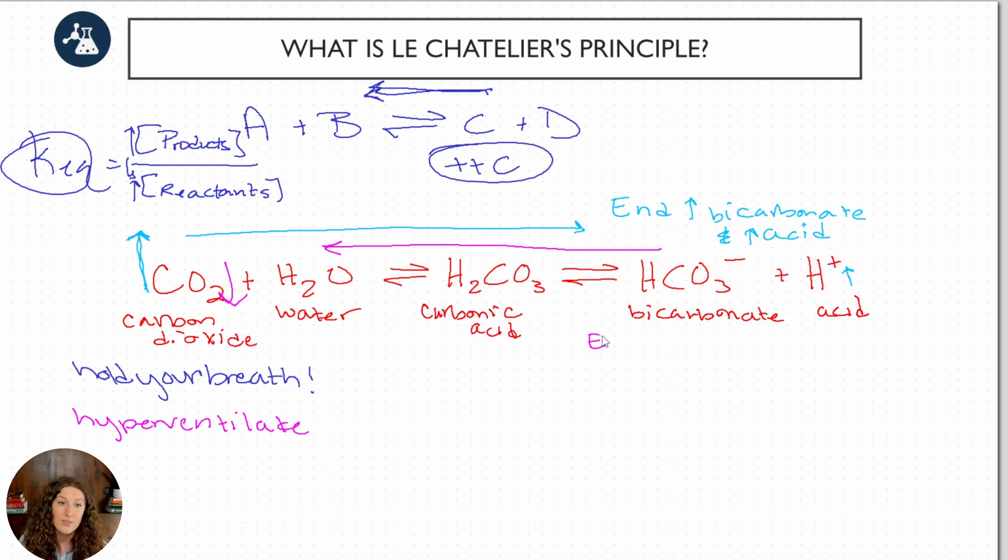And in doing so, our end result is going to be to decrease the amount of bicarbonate and decrease the amount of acid or make us more alkaline instead. This is respiratory alkalosis. And it's one of the reasons why if someone's hyperventilating, you give them a paper bag to breathe in and out because then they'll breathe back in their carbon dioxide that they just breathed out and maintain a little bit more of that balance.